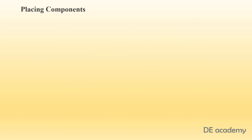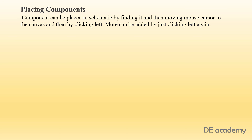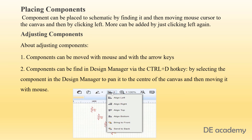After searching components, the next important aspect is placing components. It can be done by clicking on the component, moving the mouse cursor to the canvas, and then clicking the left mouse button. More instances can be added by clicking left again. After placing a component, it can be adjusted using the mouse and arrow keys with options like align left, align right, align top, align bottom, bring to front, and send to back.